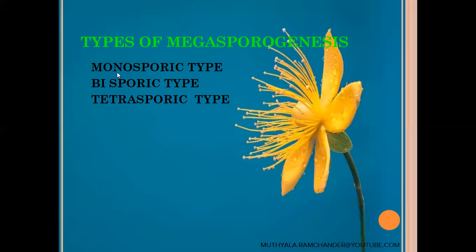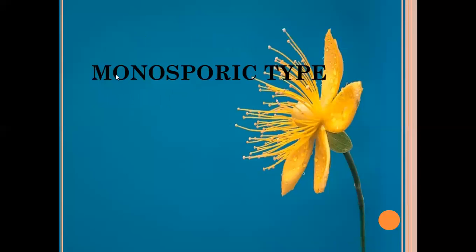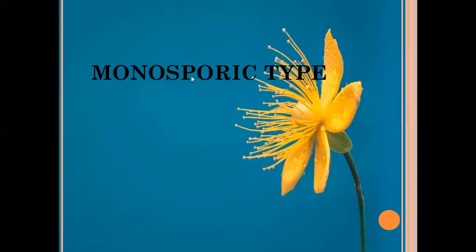Monosporic embryosacs are developed from a single megaspore, while tetrasporic embryosacs are developed from tetraspores. In monosporic type, from the nucellus at the micropylar region, one diploid cell acts as a Megaspore mother cell. That cell participates in reduction or meiotic division to form four haploid megaspores, and only one of those megaspores develops into a complete embryosac.